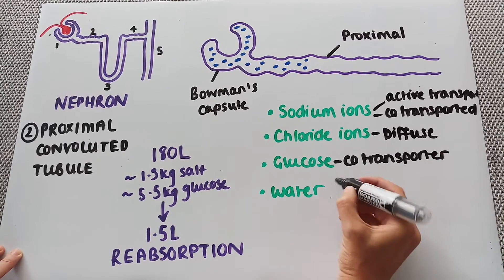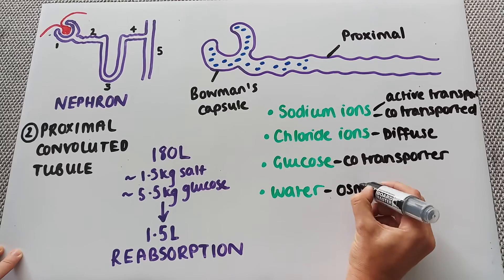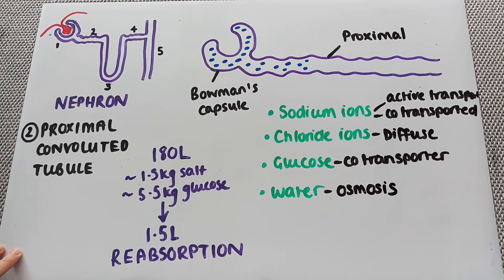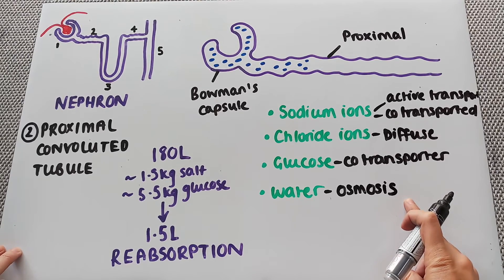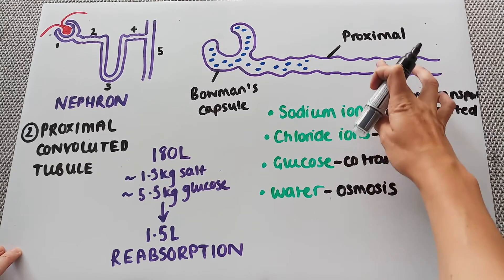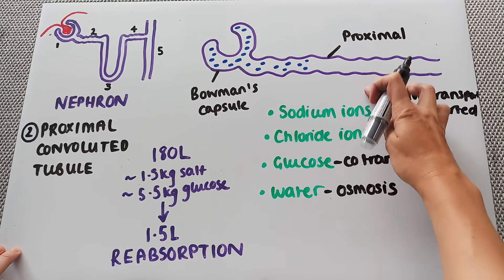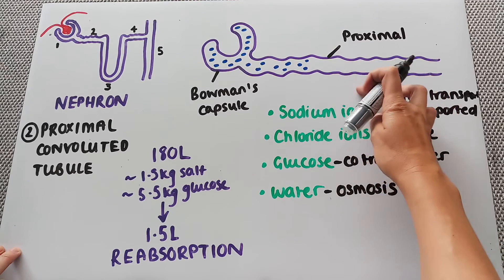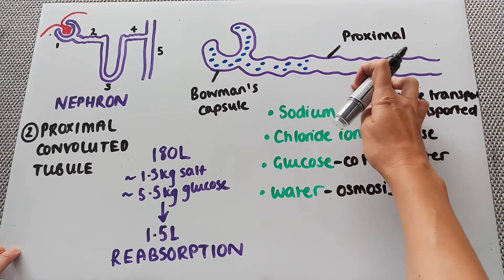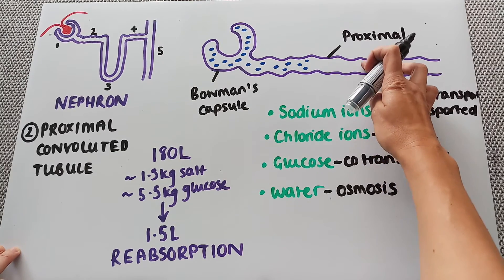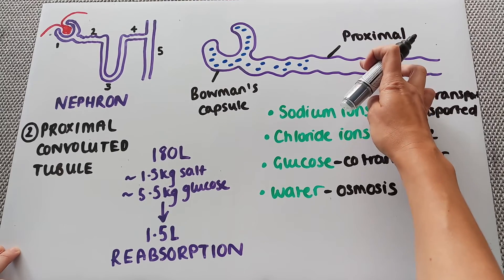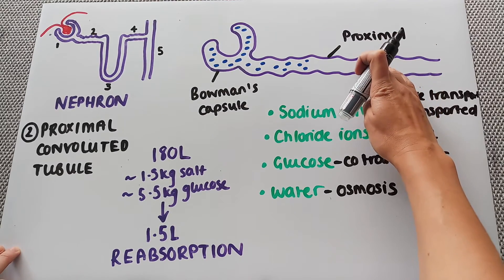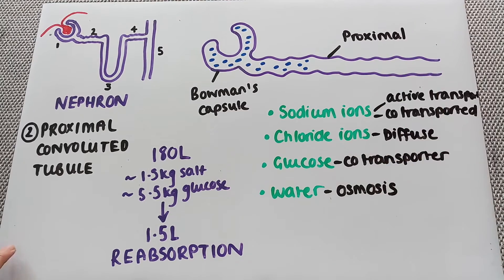Water is the final one, and this moves by osmosis — a passive process. With osmosis, water is moving from a low solute concentration to a high solute concentration. Once sodium, glucose, and chloride have moved from the proximal convoluted tubule into the surrounding blood vessels, that area becomes a high solute concentration, while inside the proximal convoluted tubule is a low solute concentration. So water will very easily move by osmosis from inside the proximal convoluted tubule out into the surrounding blood vessels.